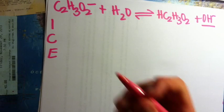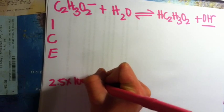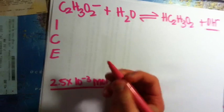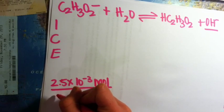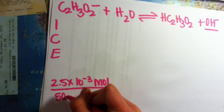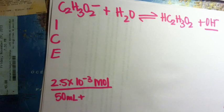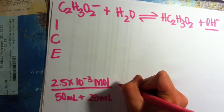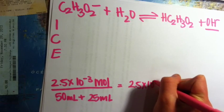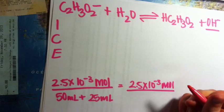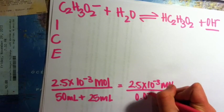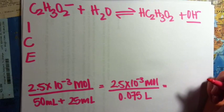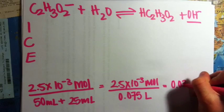We know that we start with 2.5 times 10 to the negative third moles of acetate ions. But we need to divide that by the volume, which is the volume of sodium hydroxide — 50 milliliters — plus the volume of acetic acid, which is 25 milliliters. That equals 2.5 times 10 to the negative third moles over 0.075 liters, which gives us a concentration of 0.033 molar.